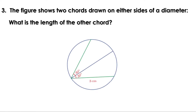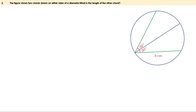The figure shows two chords drawn on either side of a diameter. What is the length of the other chord? Let us give names for the chords and the diameter. Let the chords be AB and AC and let the diameter be AD. Let O be the center of the circle. From the center, draw perpendiculars to the two chords and let them meet the chords at P and Q.